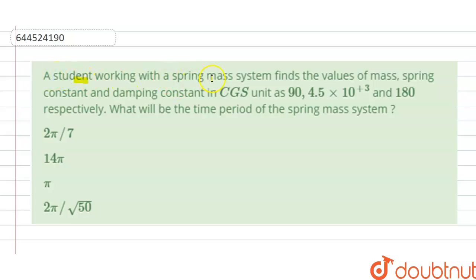A student working with a spring mass system finds the value of mass and spring constant and damping constant in CGS unit as: mass is 90, spring constant is 4.5 into 10 power 3, and damping constant is 180. What will be the time period of the spring mass system? Options A, B, C, D are given to us, so we have to find the correct option.